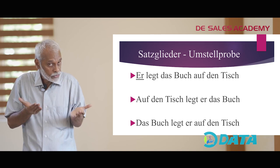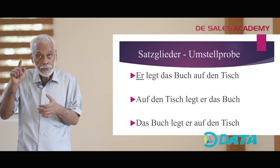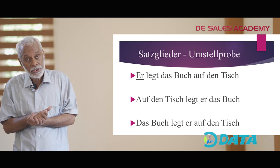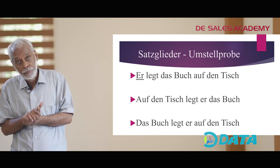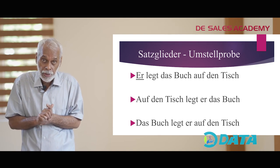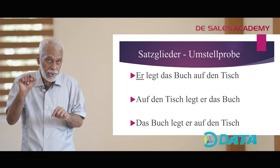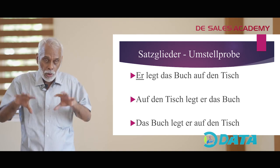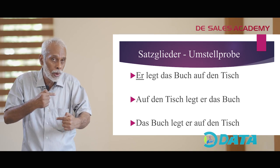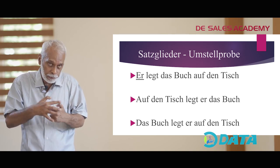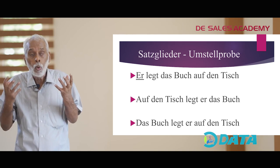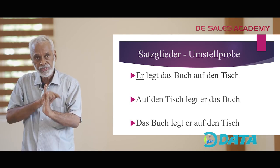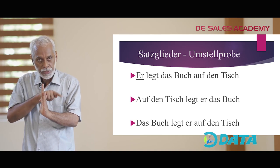This sentence we can also say: Auf den Tisch legt er das Buch, or Das Buch legt er auf den Tisch — that is possible in German. The only thing is that das finite Verb steht an der zweiten Stelle. Otherwise, all the other groups of words we can revolve around the verb. This is what is known as the Umstellprobe in einem Satz. Das finite Verb bleibt so; die anderen Satzglieder gehen um das finite Verb.